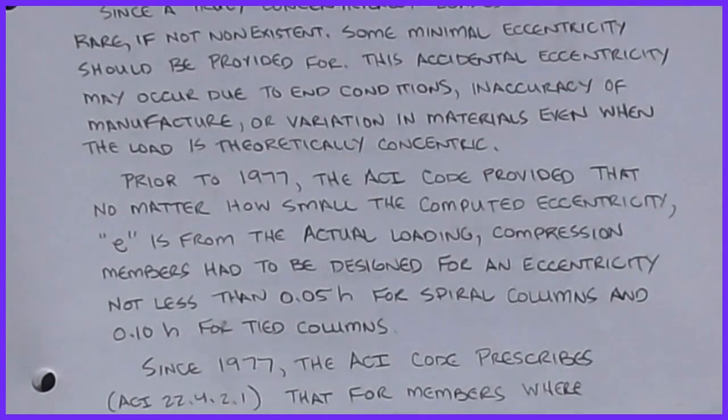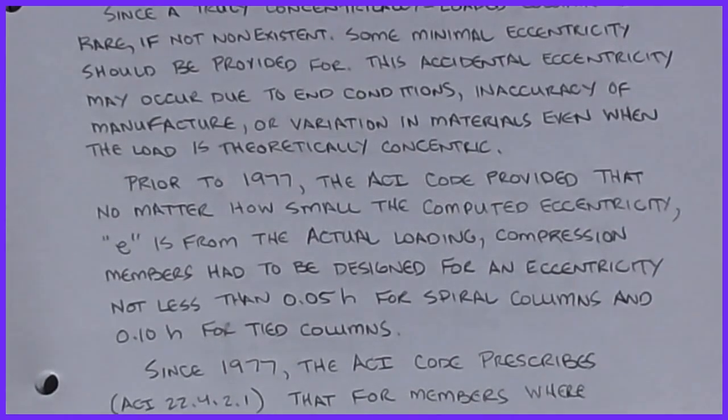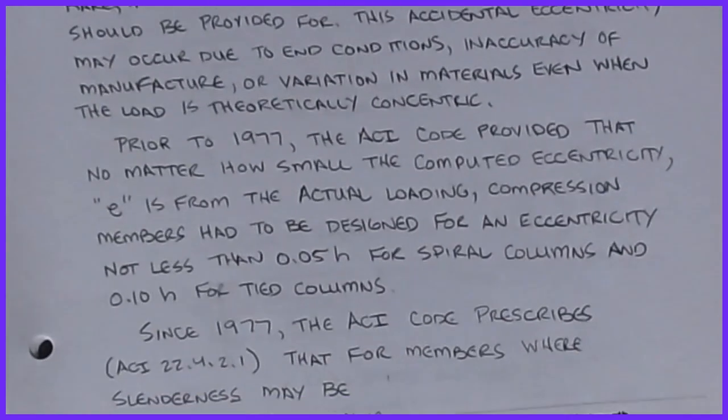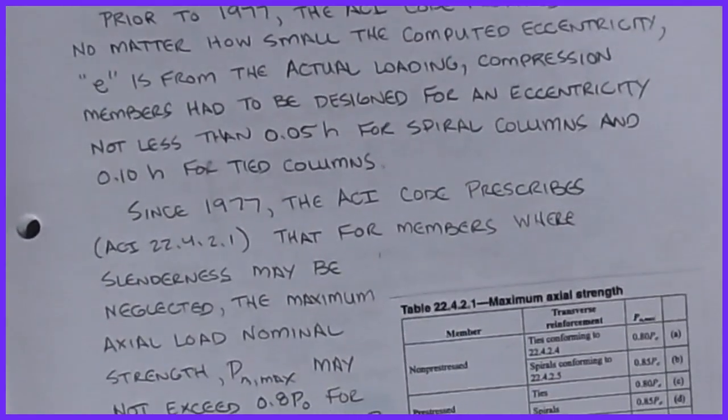It was pretty significant because when you put up a set of forms for a reinforced concrete column, maybe they're not perfectly vertical, maybe they're slanted a little bit. There is some eccentricity in there.